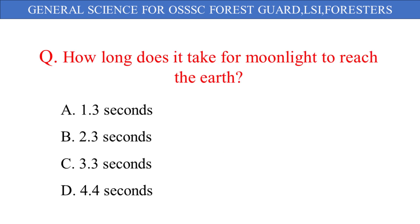How long does it take for moonlight to reach the earth? The given options are: A. 1.3 seconds, B. 2.3 seconds, C. 3.3 seconds, D. 4.4 seconds. And the correct answer is option A: 1.3 seconds.